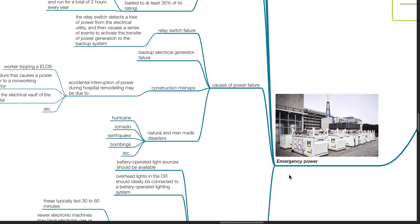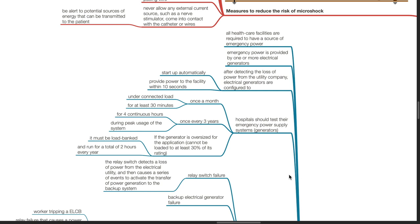Emergency power. All healthcare facilities are required to have a source of emergency power provided by one or more electrical generators. After detecting the loss of power from the utility company, electrical generators are configured to start up automatically and provide power to the facility within 10 seconds. Hospitals should test their emergency power supply systems and generators once a month under connected load for at least 30 minutes, once every three years for four continuous hours during peak usage of the system. If the generator is oversized for the application and cannot be loaded to at least 30% of its rating, it must be load banked and run for a total of two hours every year.